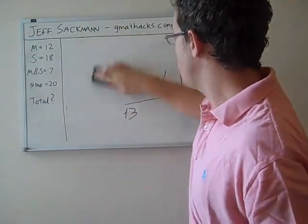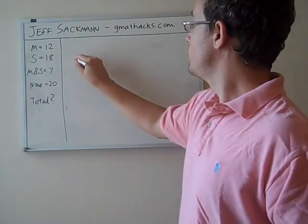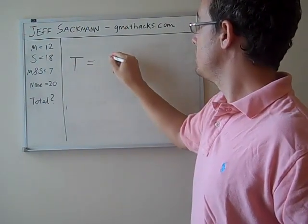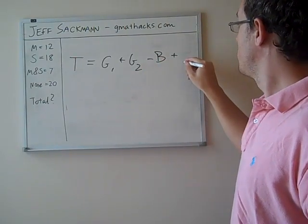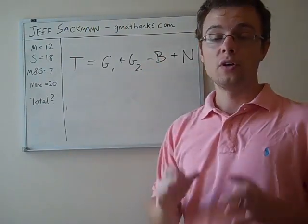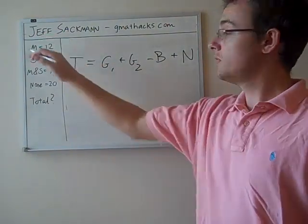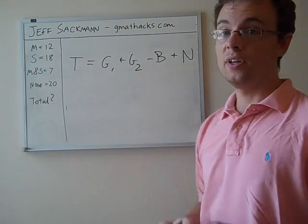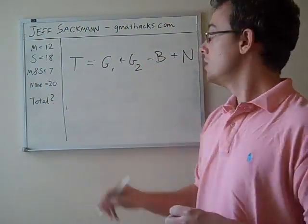The second approach is an equation that does pretty much the exact same thing. The equation is the total is equal to group 1 plus group 2 minus both plus neither. Group 1 is in this case math majors, group 2 science majors, both is the overlap, neither are the people who aren't represented in either one of the sets.